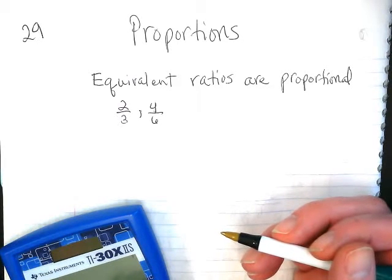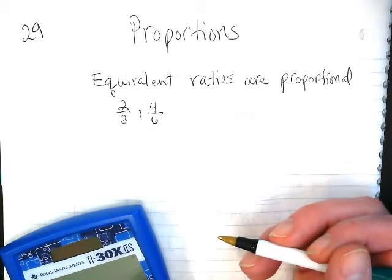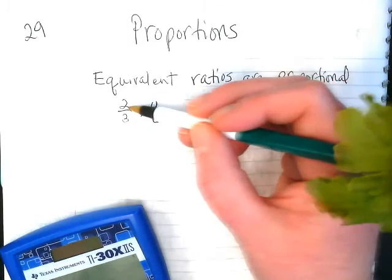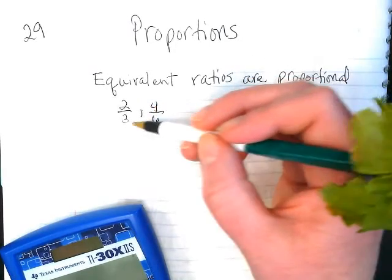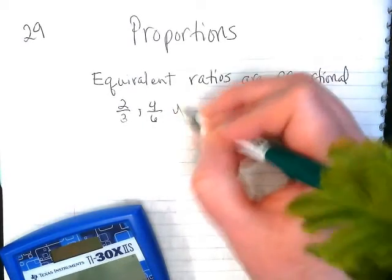Do they equal each other? And I'm seeing heads nodding, because you're using what you know about fraction rules, and you're looking at this and saying, I know that two times two is four, and three times two is six, so they are proportional. Yes? Yes?